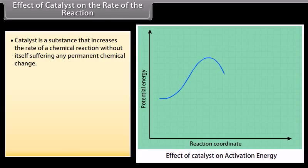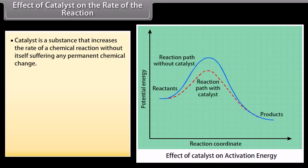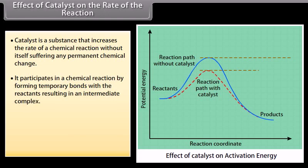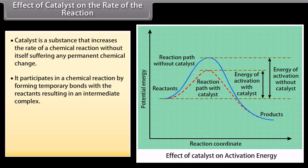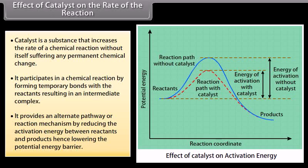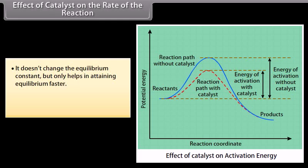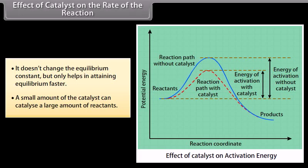A catalyst is a substance that increases the rate of a chemical reaction without itself suffering any permanent chemical change. It participates in a chemical reaction by forming temporary bonds with the reactants resulting in an intermediate complex. It provides an alternate pathway or reaction mechanism by reducing the activation energy between reactants and products, hence lowering the potential energy barrier. It doesn't change the equilibrium constant but only helps in attaining equilibrium faster. A small amount of catalyst can catalyze a large amount of reactants.